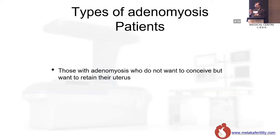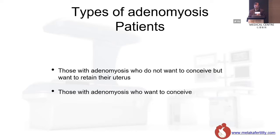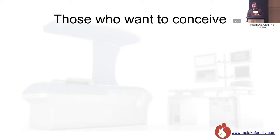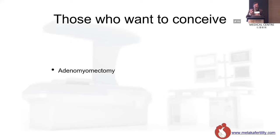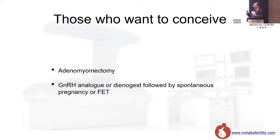When I see patients with adenomyosis, there are two groups: those who do not want to conceive but want to retain their uterus, and those who want to conceive. In this lecture, I will concentrate on the second group — those with adenomyosis who want to conceive and have infertility. Options include adenomyomectomy, which is always a very difficult operation with risk of uterine rupture, or GnRH analog or Dienogest, hoping the patient can conceive spontaneously or with frozen embryo transfer.